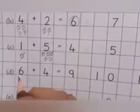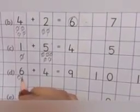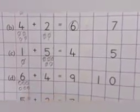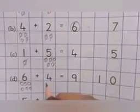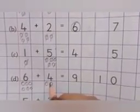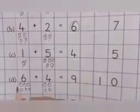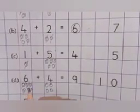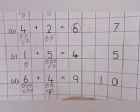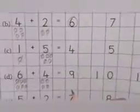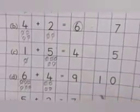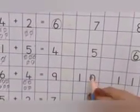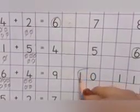Now look at column D. Which number is this? 6. So we will draw 6 circles. 1, 2, 3, 4, 5, 6. Now which sign is this? Plus. And which number is this? 4. So we will draw 4 circles. 1, 2, 3, 4. Now we will count all the circles together. 1, 2, 3, 4, 5, 6, 7, 8, 9, 10. So our answer is 10. We will circle on the number 10.